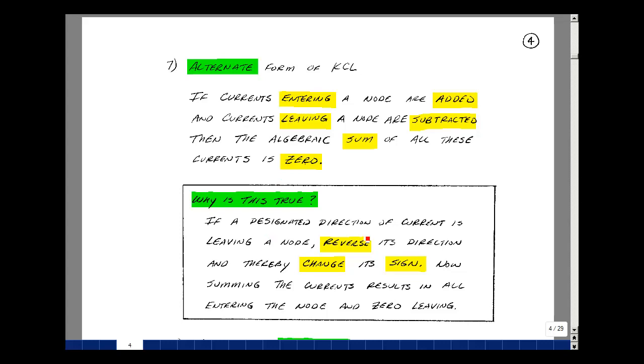Now why would that be true? Well, if a designated direction of current is leaving the node, we could reverse its direction and thereby change its sign. Now summing the currents results in all the currents entering a node and then leaving, so the summation with the minus signs would have to be equal to zero. Why would we do that? There's some theorems that are actually easier to prove if one side of the equation is zero. In the course, I will normally not be using this alternative form of Kirchhoff's current law. I find it easier to use the first technique that we describe. We'll use that through most of the course.